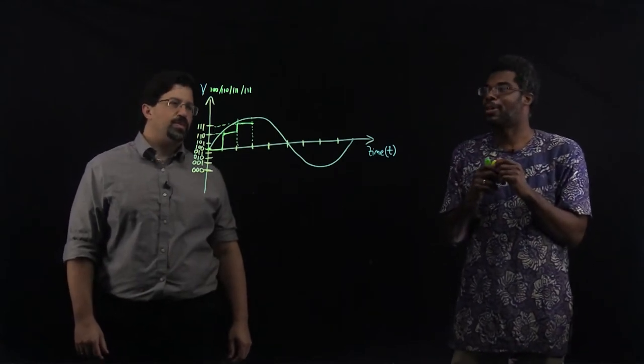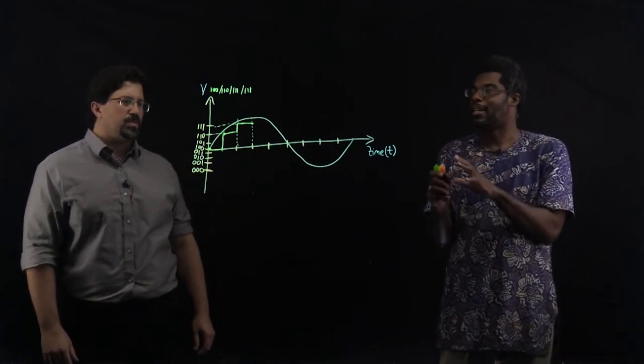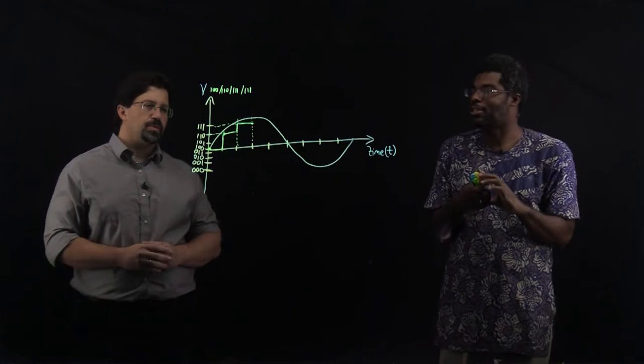To do that we're going to talk about how the ones and zeros are represented inside a computer. And I'm going to use an analogy for that.